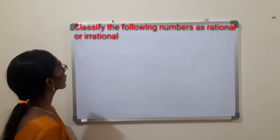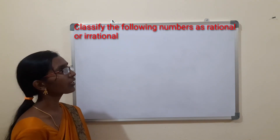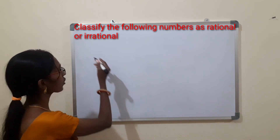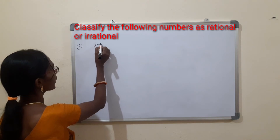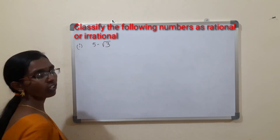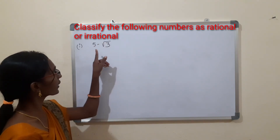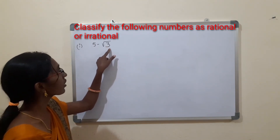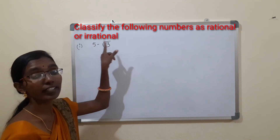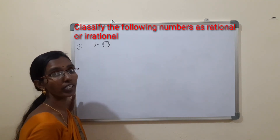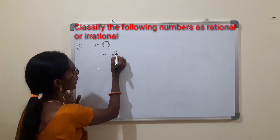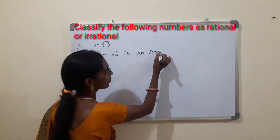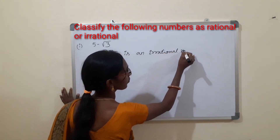There is a second question: Classify the following numbers as rational or irrational. The first one is 5 - √3. Since subtracting an irrational number from any number gives an irrational number, 5 - √3 is an irrational number.